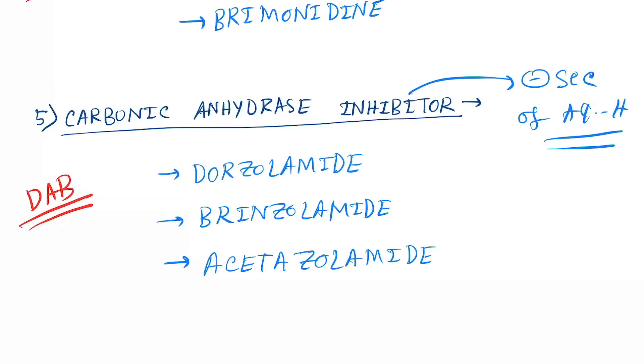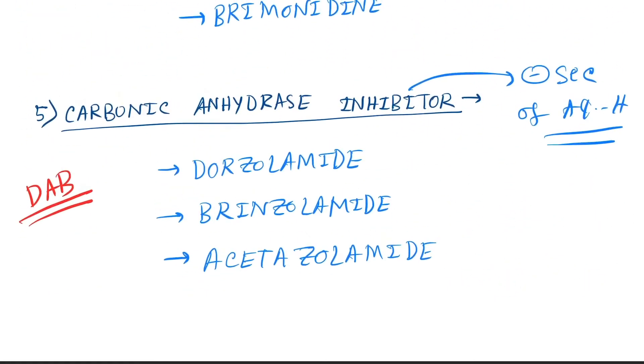The mnemonic is also DAB: D for dorzolamide, A for acetazolamide, B for brinzolamide. Thank you guys for watching this video. If you like this video, please hit the like button and subscribe to my channel.